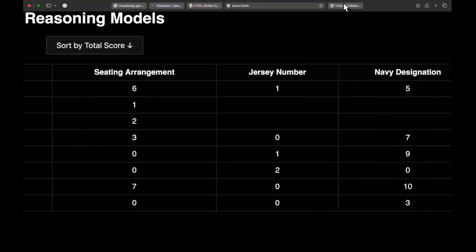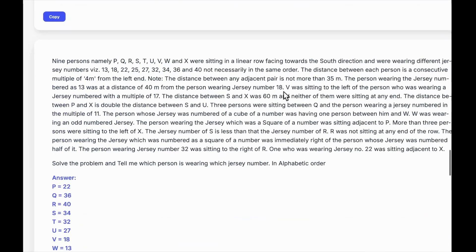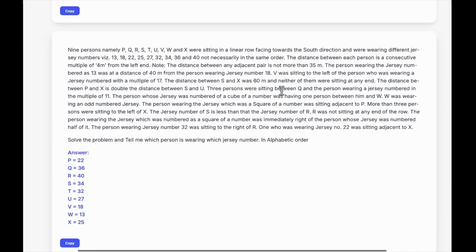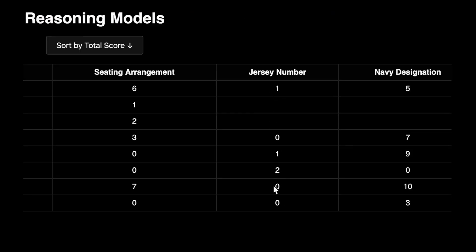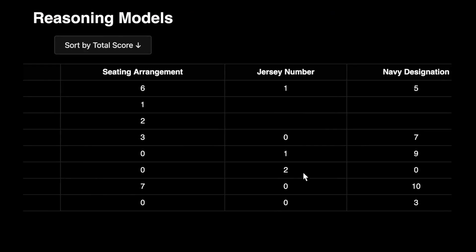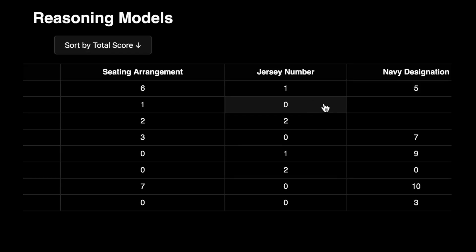The next question is the jersey number — the hardest question I currently have. It's a pretty long question and you have to respond with the correct jersey number of the person. The highest any model scored is DeepSeek scoring 2 out of 10; the rest score 1 or 0. O4 mini high scores 2 out of 10. The open source model scores 0, so O4 mini high is higher than GPT OSS 120B here.